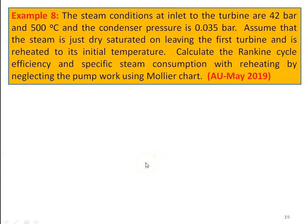We continue with the previous problems. This is also from the Anna University question paper, May 2019 — Example number 8. The steam condition at the inlet to a turbine are 42 bar and 500 degree Celsius, and the condenser pressure is 0.035 bar. Assume that the steam is just dry saturated on leaving the first turbine and it is reheated to its initial temperature.